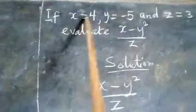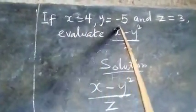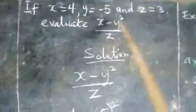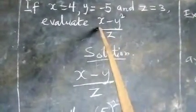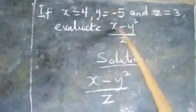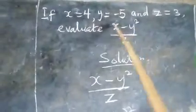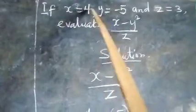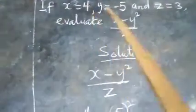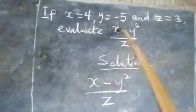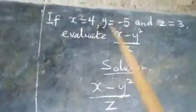If x equals 4, y equals minus 5, and z equals 3, evaluate x minus y squared all over z. We have to evaluate this expression. The values have been given to us, and we will substitute them into this expression to represent each value.